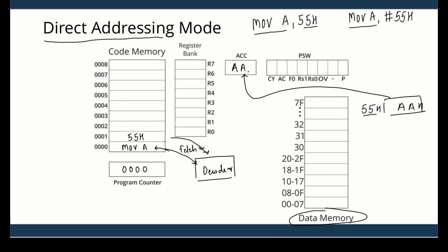The key difference between the two instructions is: in immediate addressing mode, the operand is the actual data to be moved into the accumulator. In direct addressing mode, the operand is the data memory address from where the data has to be taken and moved into the accumulator. To distinguish them, just look for the hash symbol. When you see a hash, it is immediate addressing mode; when there is no hash, you are taking data from a data memory address.